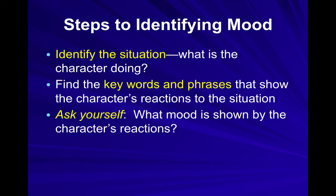When you're identifying mood, first identify the situation: what's going on, what's your character doing, do they want to be there or not? Find key words and phrases that show your character's reactions to the situation — are they excited, scared, or tense? Then determine what the mood is shown by all this. Are we happy to be here? Are we scared? Are we confused? Is it mysterious? So all of these are ways that we can find mood in a story.